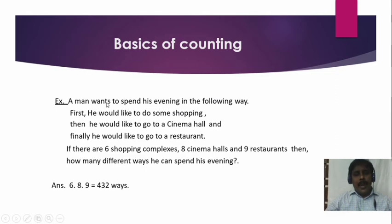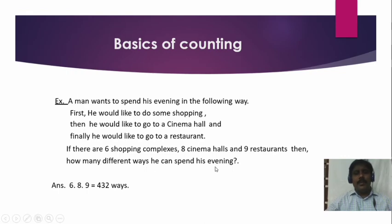Next problem: a man wants to spend his evening — first shopping, then cinema, then restaurant. If there are 6 shopping complexes, 8 cinema halls, and 9 restaurants, how many different ways can he spend his evening? By using the product rule: 6 into 8 into 9 equals 432 ways. The answer for this problem is 432 ways.